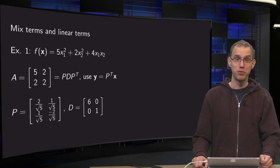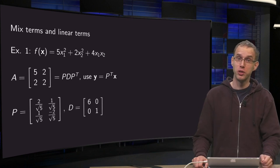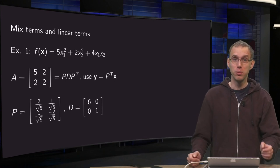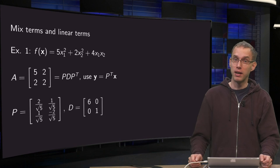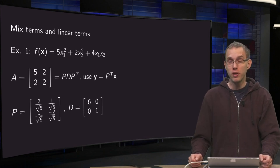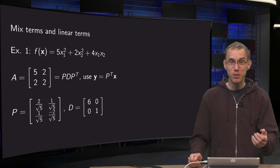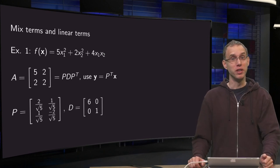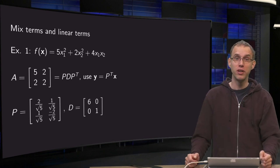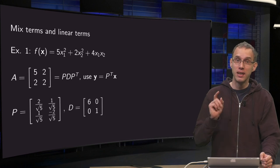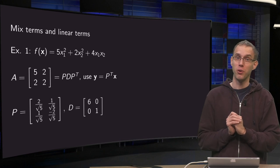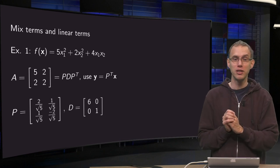We can eliminate mixed terms from our quadratic forms by choosing an appropriate basis, and we can eliminate linear terms from our function by completing the square. But what can we do if we have both mixed terms and linear terms? We will need to do both operations and in the correct order, as you will see in this video. One warning: the order in which you do this is quite important. So let's do it.